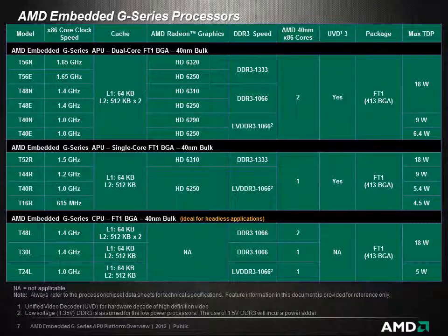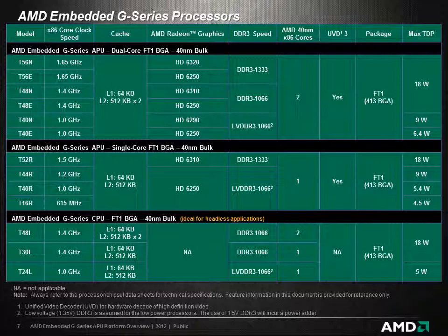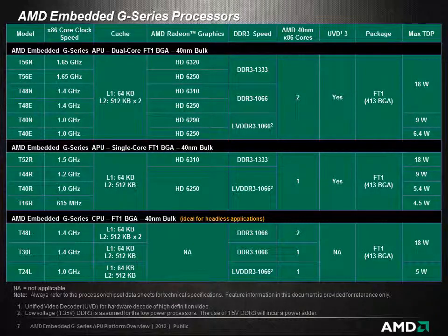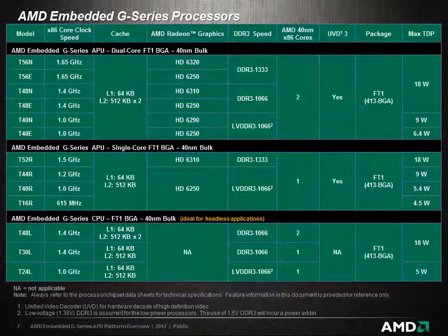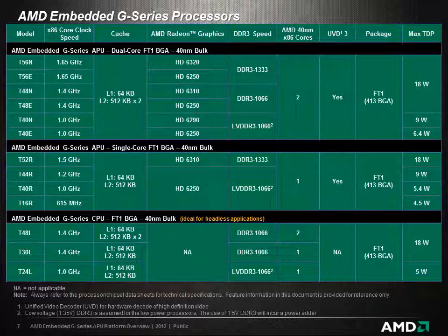Take a moment to review these basic AMD Embedded G-Series processor specifications. As you can see, AMD G-Series processor models are available in several versions, including single and dual-core X86s ranging from 615 MHz to 1.65 GHz with 4.5 to 18 Watt thermal design power.